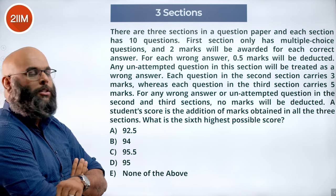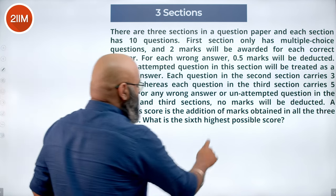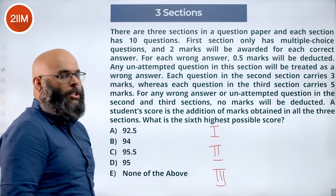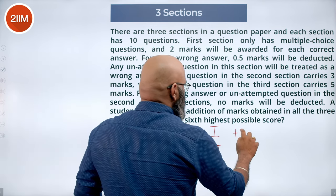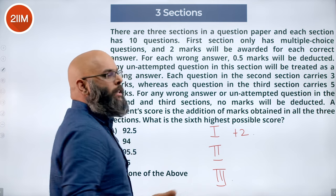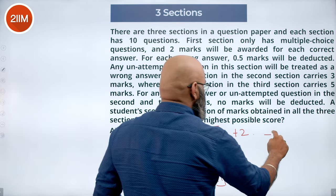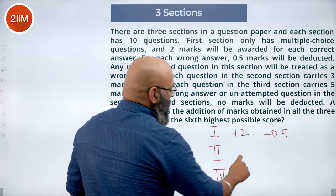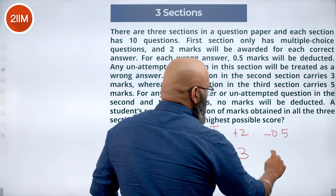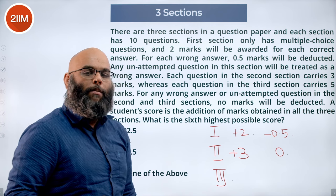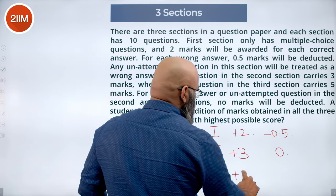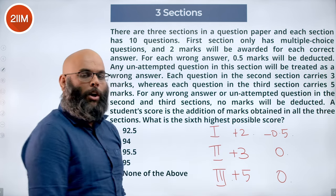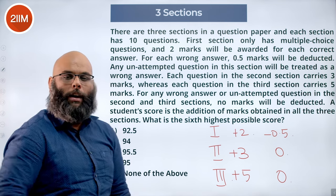What is the sixth highest possible score? We are given three sections. In section 1, a right answer carries +2 and a wrong answer or unattempted question carries −0.5. In the second section, a correct answer gets 3 marks but a wrong answer deducts no marks. Similarly, the third section has 5 marks for a right answer and 0 marks deducted for wrong or unattempted questions. This is our marking scheme.